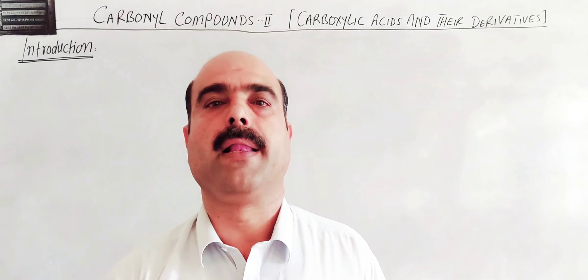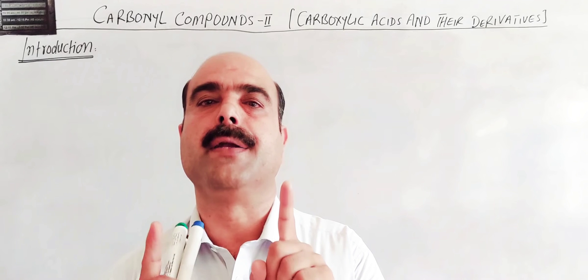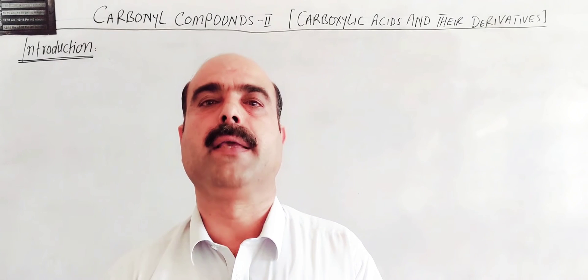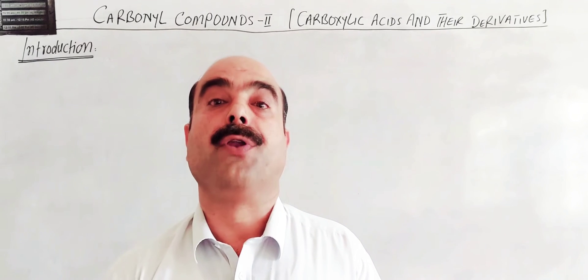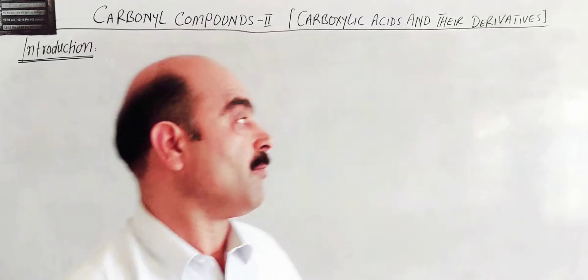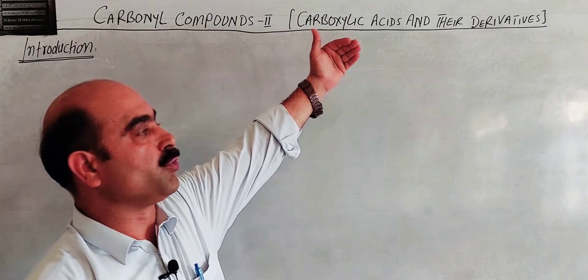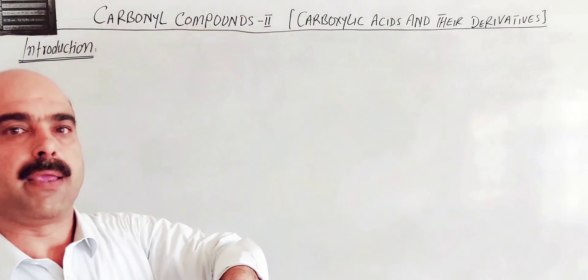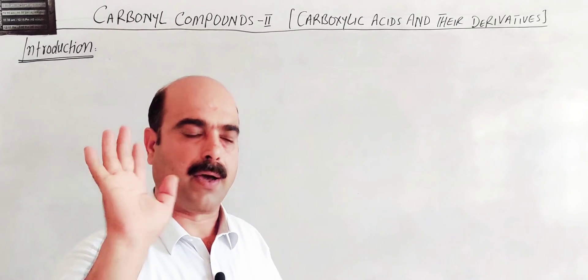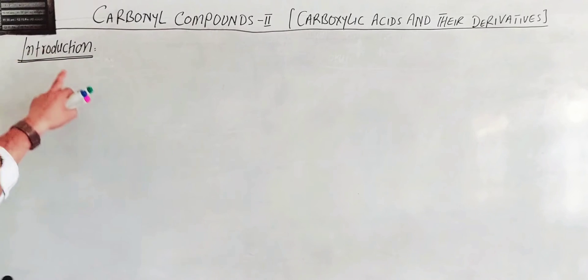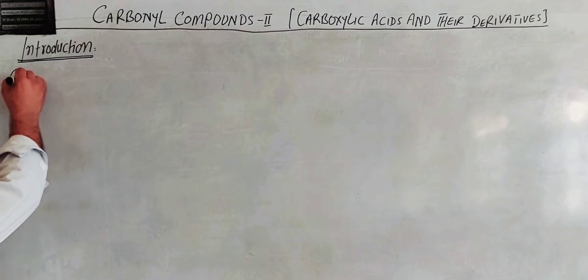This is Chapter Number 20. The name of the chapter is Carbonyl Compounds 2: Carboxylic Acids and Their Derivatives. For Chapter 19 on aldehydes and ketones, our discussion is complete. Now we start Chapter 20 to discuss carbonyl compounds 2 — carboxylic acids and their derivatives — including common name, IUPAC name, method of preparation, and chemical reactions.